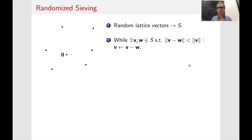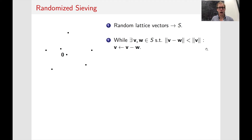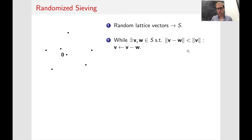Let me present the idea of randomized sieving, which dates back to Ajtai, Kumar, and Sivakumar. In the first stage, we generate many random lattice vectors and store them in a set S. While there are two lattice vectors in S that are close, we subtract them to get a shorter lattice vector, continuing until we can't anymore. We'd expect that we get shorter and shorter vectors, ending up with the shortest. It's not clear why we wouldn't end up with just the zero vector — this has to be addressed.